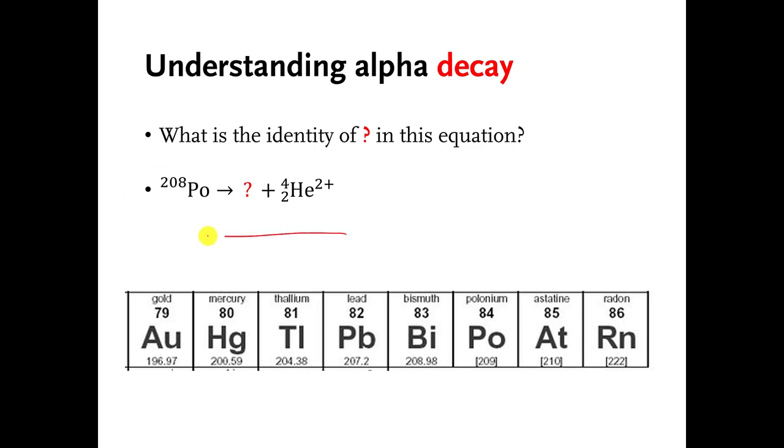You can practice on this one. This is polonium-208. And this is enough of the periodic table to figure this out. You can pause the video and think about this. I'm pausing the video. Well, everything on the left side of the arrow is 208. So everything on the right side has to add up to a weight of 208. The helium took four of the weight, if you want to think of it that way. So the question mark has to have a weight or a mass number of 204.